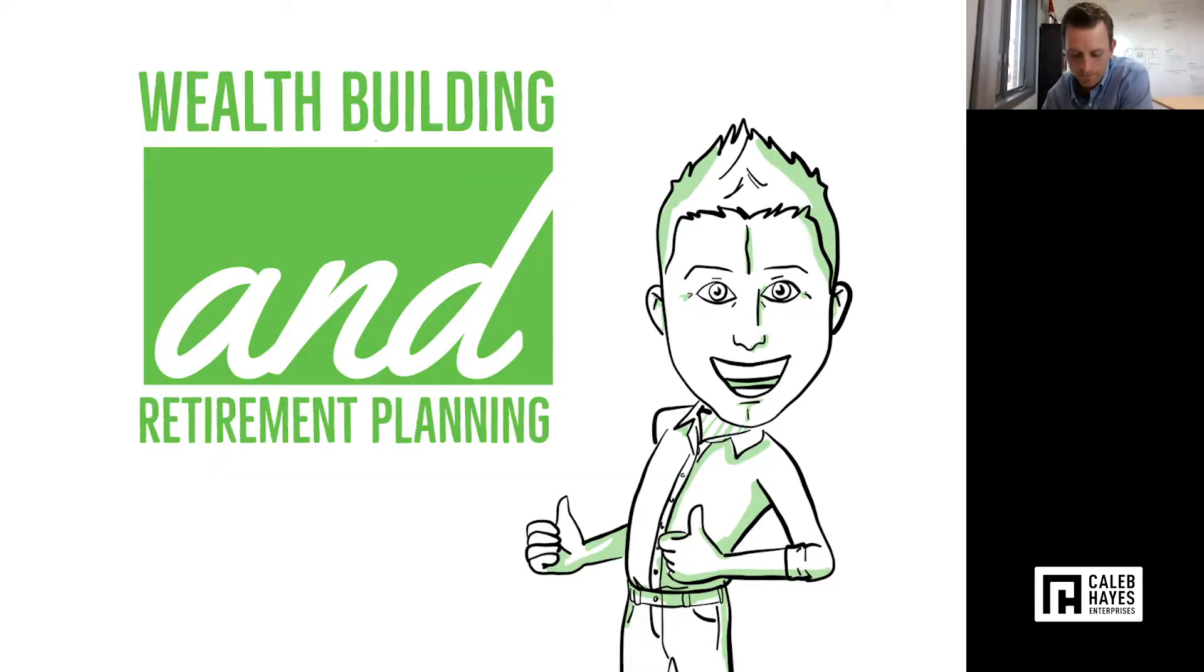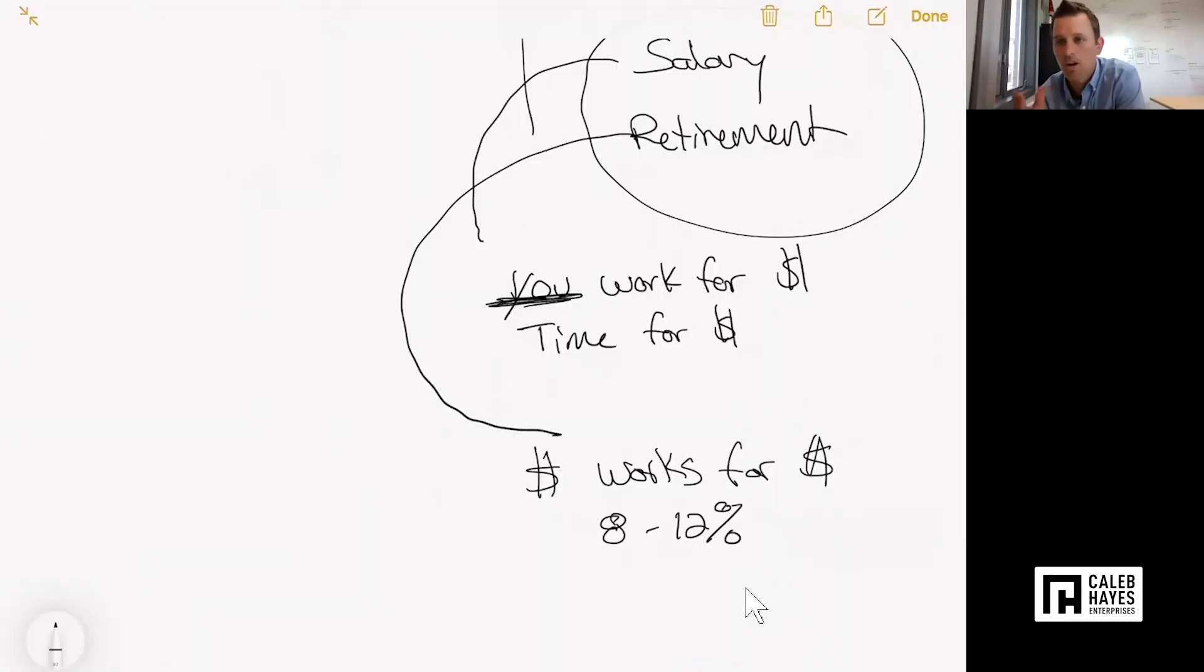So how come Caleb doesn't give any of his money to his retirement or his stockbroker guy? I only give him my Roth IRAs. Why would I do that? Because the Roth has massive tax benefits. I max out my wife and I's every year, but why would I not give him more? Well, you're probably getting a better return on your other investments. There you go. I've trained myself to be a better financial advisor than anybody else I could find.